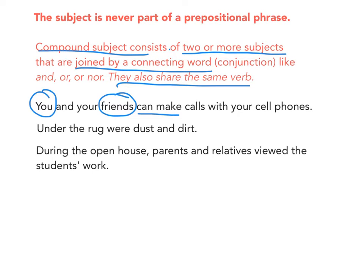'Under the rug were dust and dirt.' This is one of those sentences where the subject isn't at the beginning. What was under the rug? It was 'dust and dirt,' and the verb that they share is 'were.'